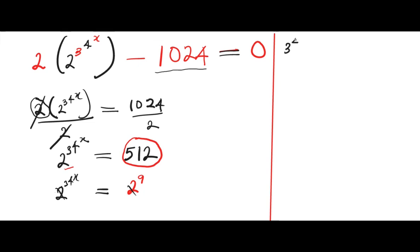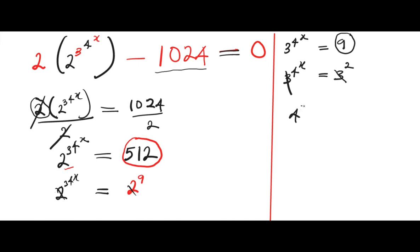We are left with three raised to the power of four raised to the power of x, equals nine. Since the bases of two are equal they cancel, so we're now left with three raised to the power of four raised to the power of x. We express nine in terms of three: nine is equivalent to three raised to the power of two. Since the bases are also equal here, they cancel and we are left with four raised to the power of x equals two.